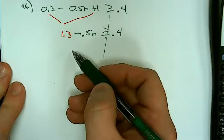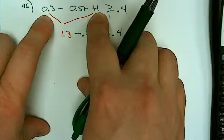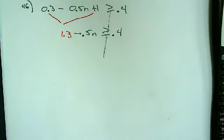Yeah. Well, the 1 was there. Yeah, it is. The problem says, and I quote, 0.3 minus 0.5n plus 1 is greater than or equal to 0.4. So I'm just combining my like terms.